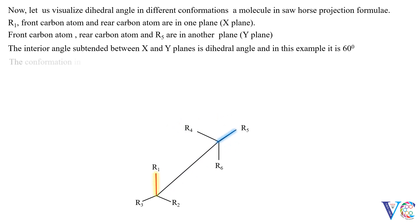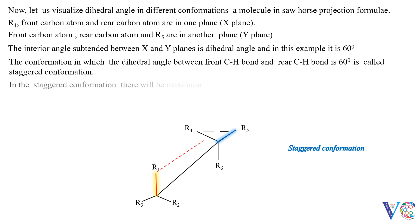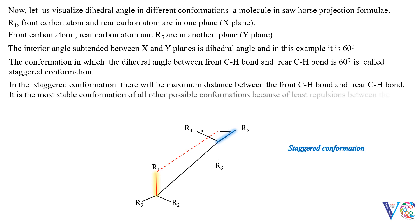The conformation in which the dihedral angle between the front C-H bond and the rear C-H bond is 60 degrees is called staggered conformation. In this staggered conformation, there will be maximum distance between the front C-H bond and the rear C-H bond. It is the most stable conformation of all other possible conformations, because of the least repulsions between the electron pairs of adjacent C-H bonds.